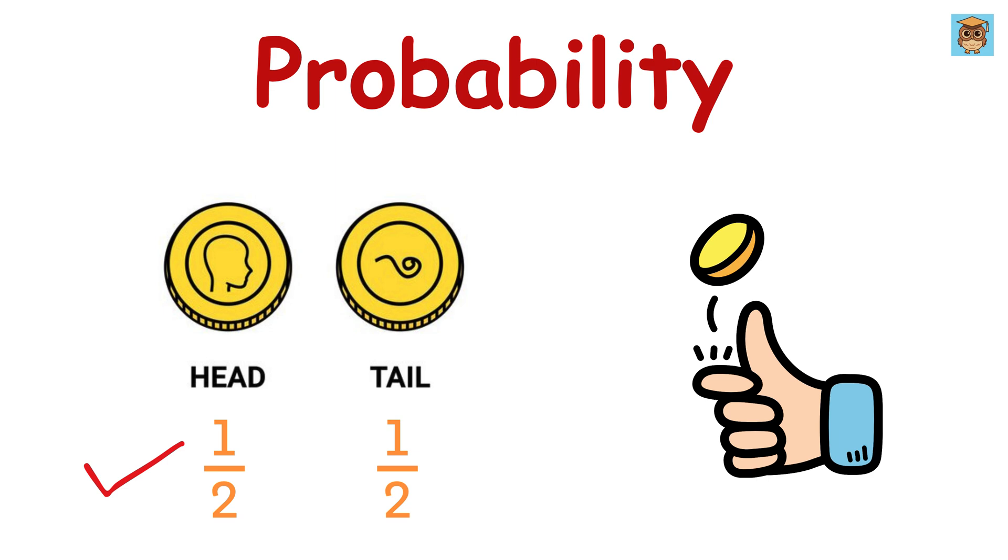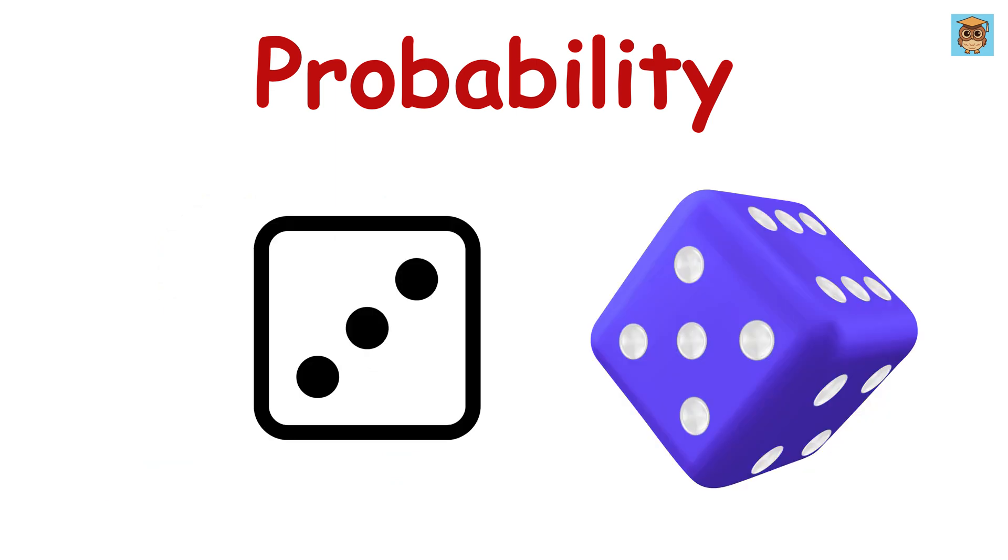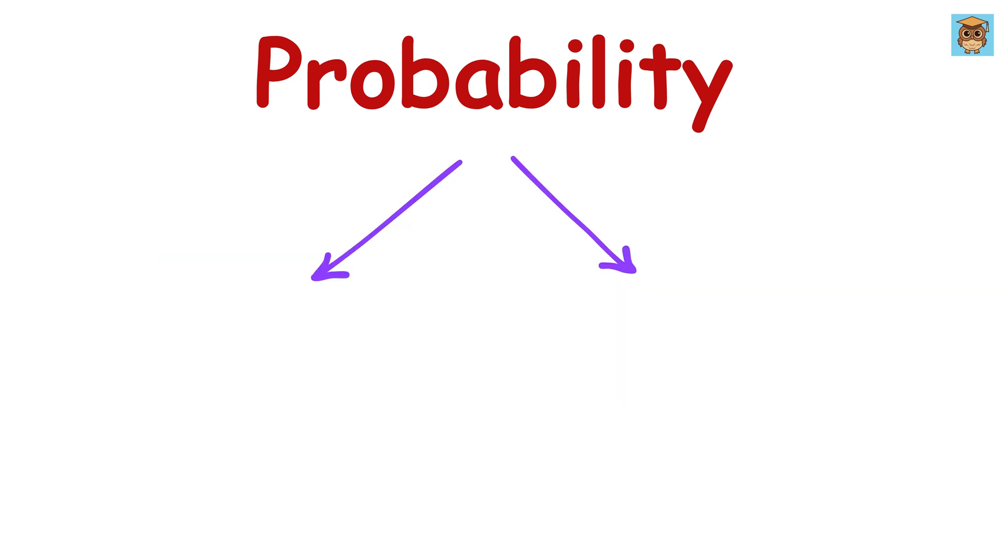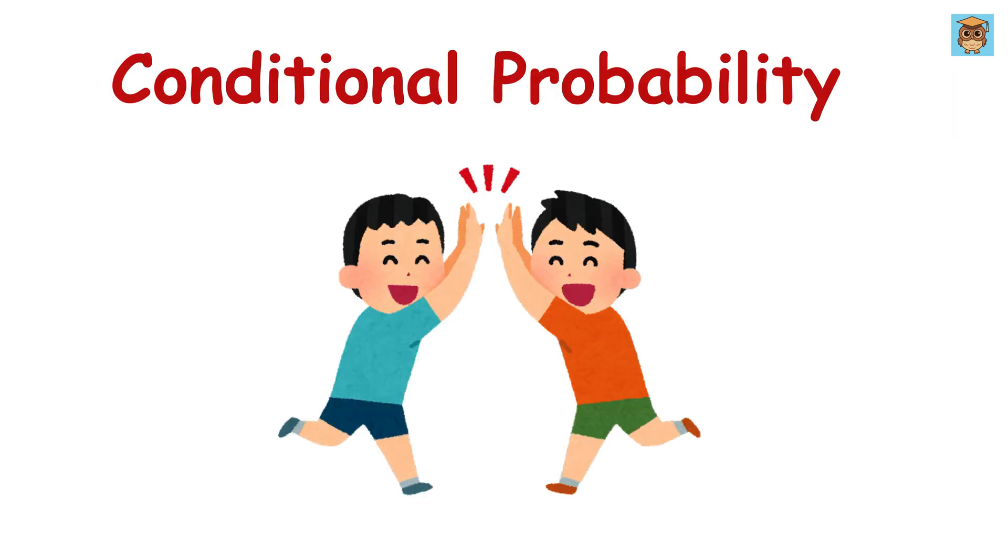If you roll a dice and want a three, you have one chance out of six. So probability is always a number between zero and one, where zero means impossible and one means it's guaranteed to happen. This is simple probability. Now comes the fun part called conditional probability.